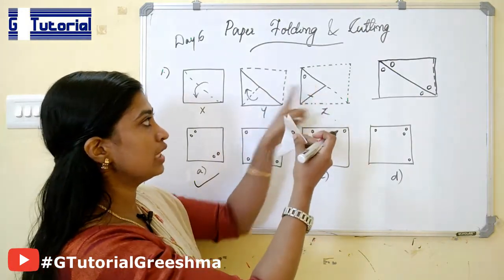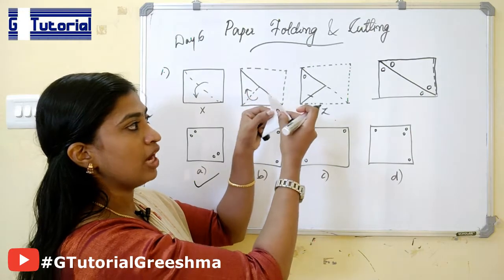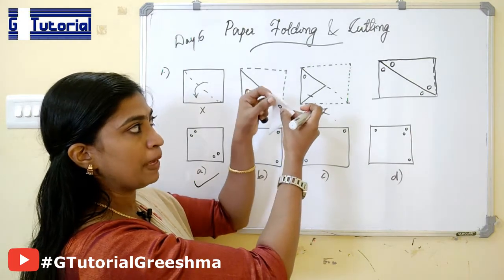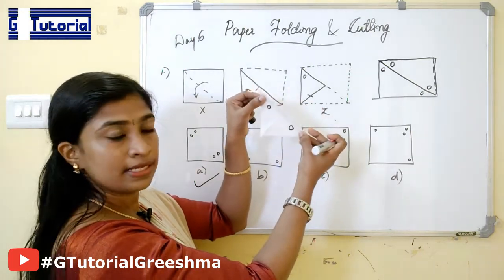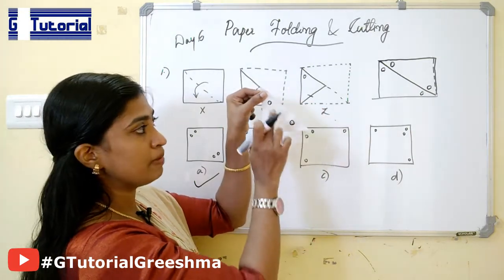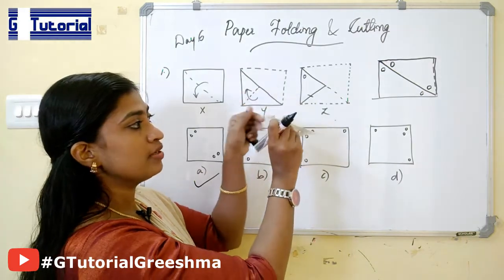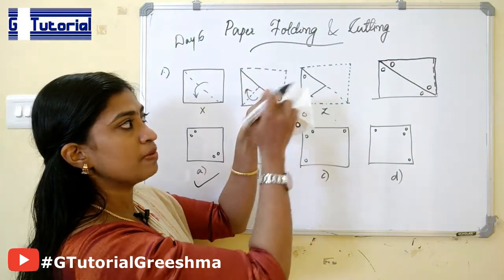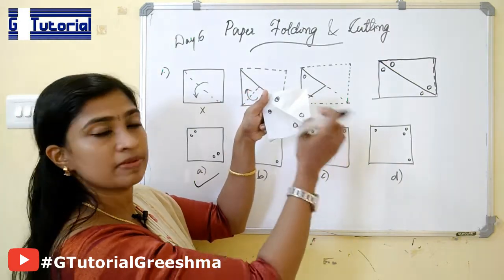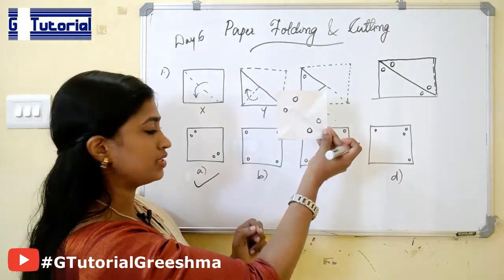You have to consider the last figure — that is, the paper after making a cut. The paper is opened like this, then this cut will be present here also. Then this is opened — this will be present here, this will be present here. So this is the answer figure.